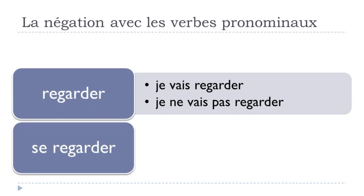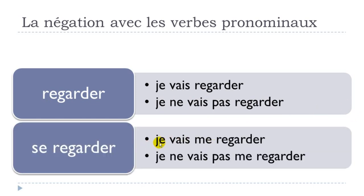With SE REGARDER in the futur proche, you get JE VAIS ME REGARDER — 'I am going to watch myself.' For the negative form, it behaves the same way: NE and PAS go before and after the first verb ALLER, giving JE NE VAIS PAS ME REGARDER.